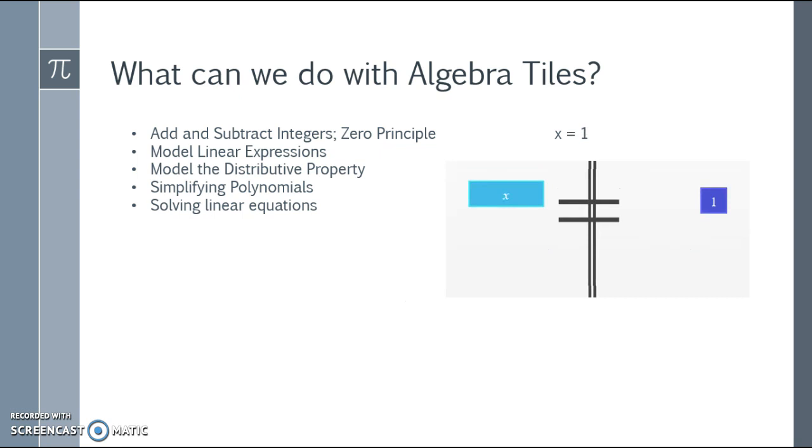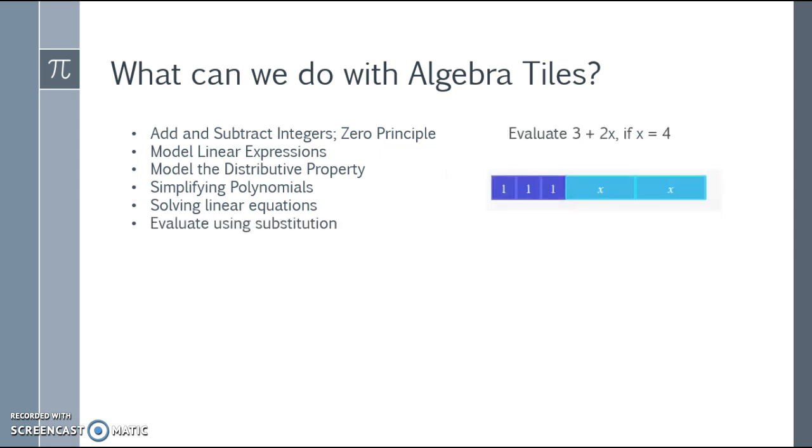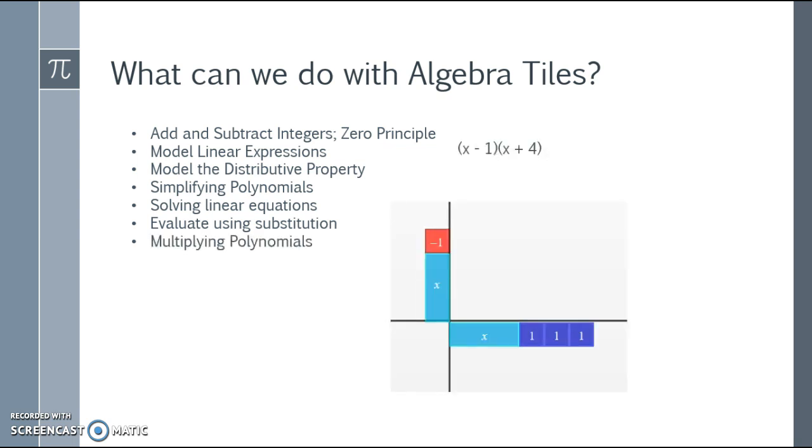Notice then by adding in negative two to both sides, I've created two pairs of zeros that I can take away, leaving me with x equal to one. I can evaluate using substitution. Currently I have the expression three plus two x. What happens if I were to replace my x values with four units? Covering them up, I'll end up then with nine whole units.